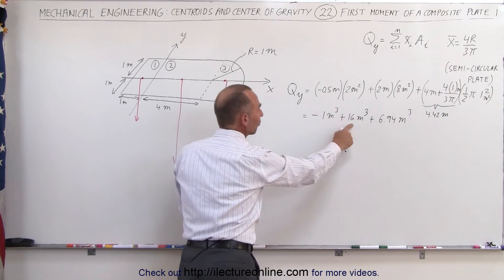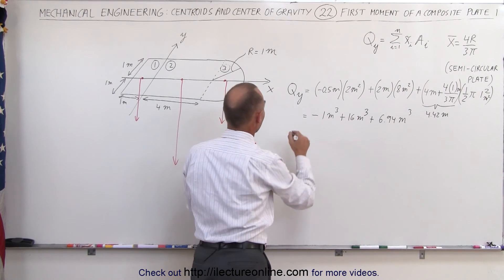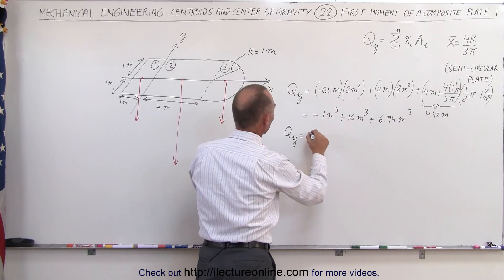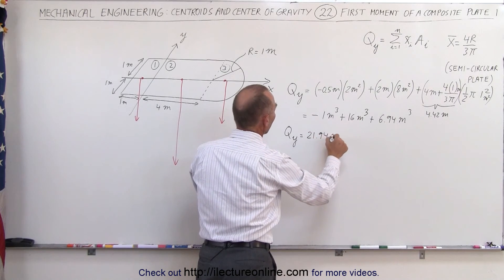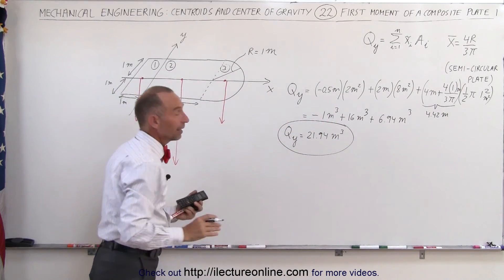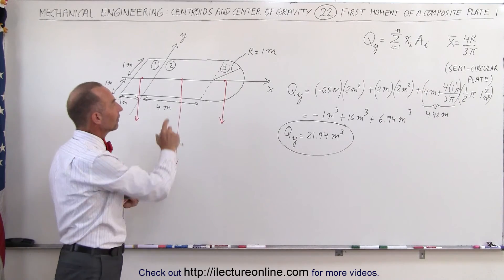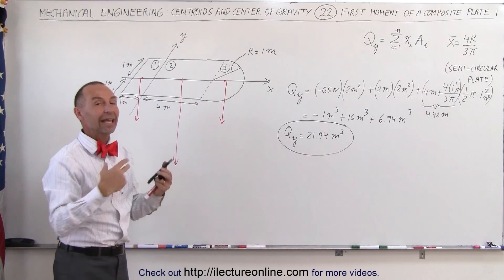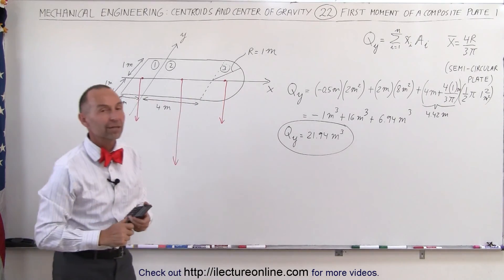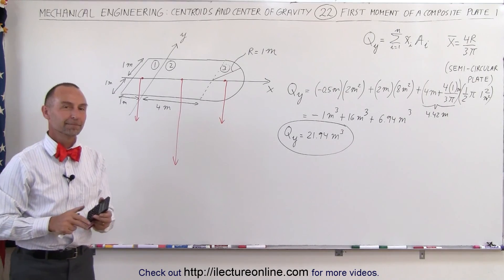Remember that this is negative, so it's 15 plus 6.94, and the first moment about the y-axis of this composite plate is 21.94 meters cubed. It is positive, which places it to the right of the y-axis. It's simply an averaging out of the center mass of each individual part of that composite plate times the area of each of those parts. Add it all together, we get a positive 21.94 cubic meters, and that's how we find the first moment of a composite plate like that.